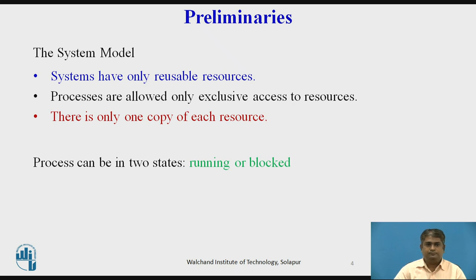Preliminaries — the system model. The problem of deadlock in distributed systems is studied under a general system model. The systems have only reusable resources, processes are allowed only exclusive access to resources, and there is only one copy of each resource.